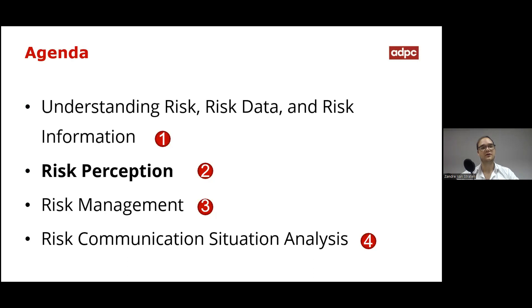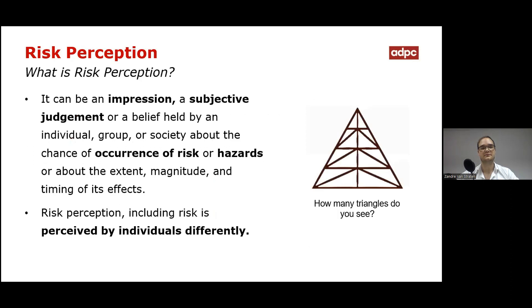Now we move on to the second point, which is risk perception. Risk perception can be an impression, a subjective judgment, or a belief held by an individual, group, or society about the chance of occurrence of risk or hazards, or about the extent, magnitude, and timing of its effects. Risk is perceived by individuals differently.